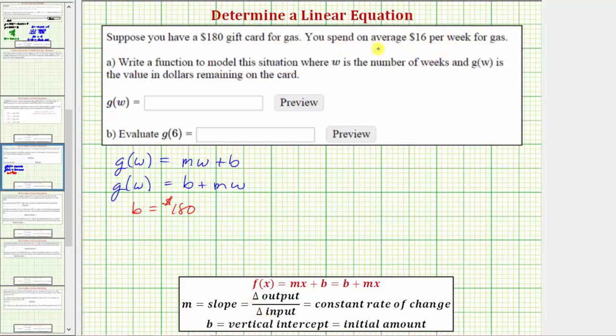Again, because on average you are spending $16 per week for gas, so the value is decreasing by $16 per week. So m is equal to negative $16 per week.